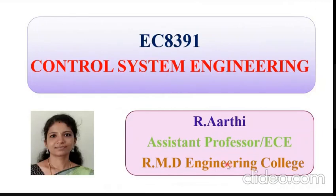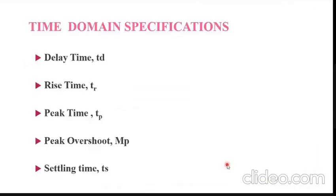So what is time domain specification? Basically, the time domain specification can be classified into five types: delay time, rise time, peak time, peak overshoot, and settling time.